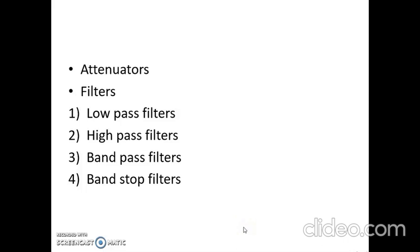An attenuator is a two-port resistive network used to reduce the signal level by a given amount. There are different types of attenuators such as resistance attenuators, symmetrical T attenuators, L-type attenuators, and pi-type attenuators.